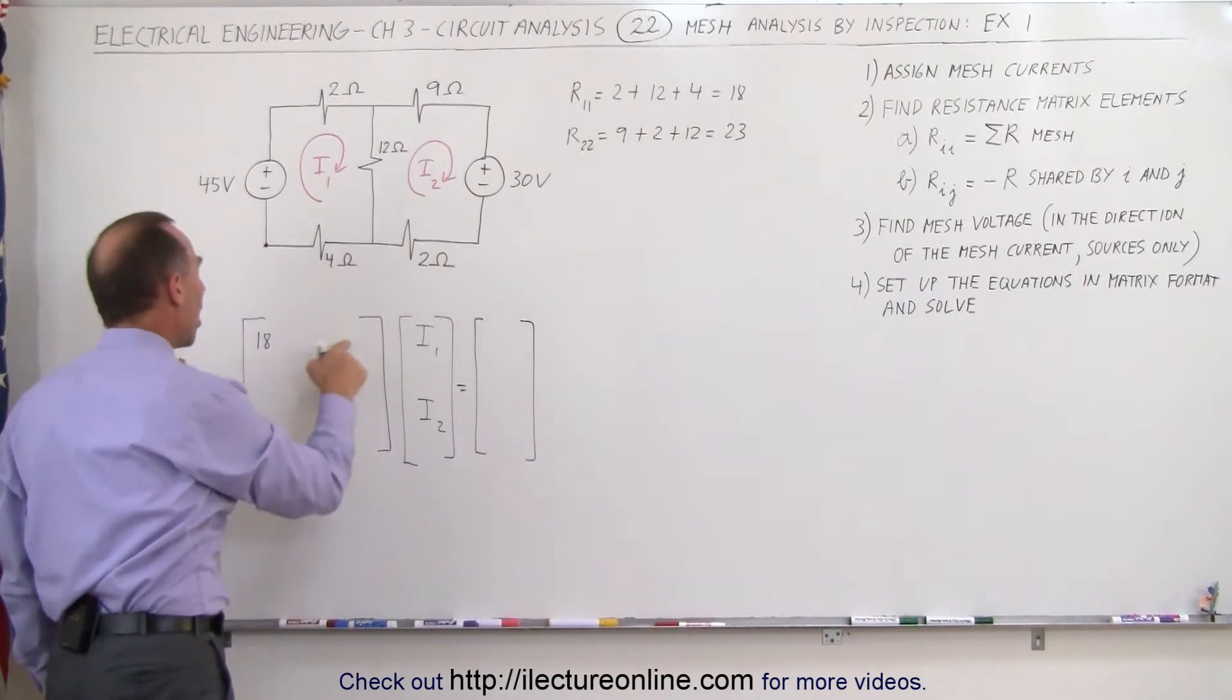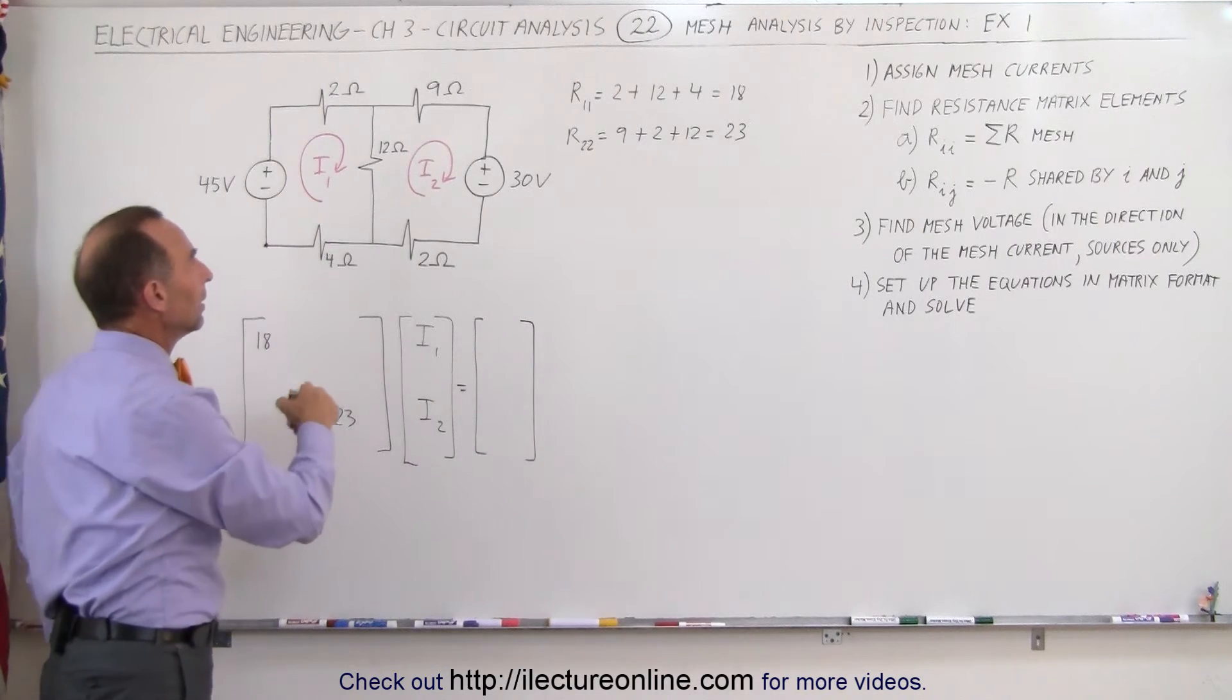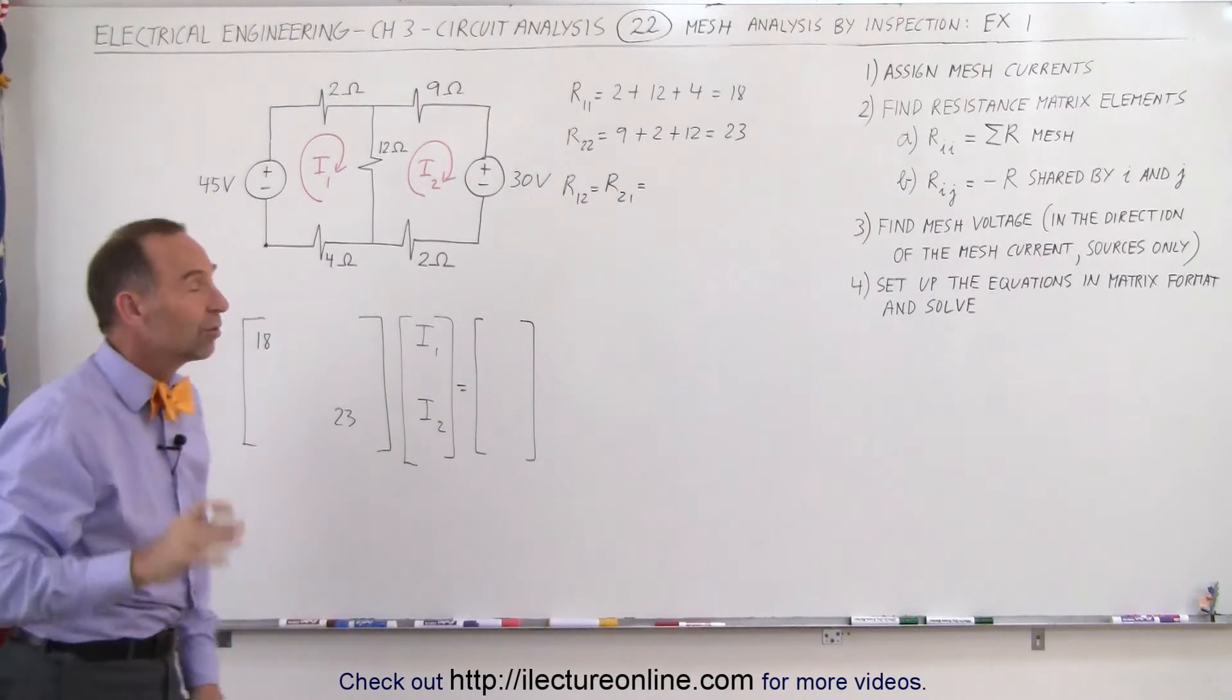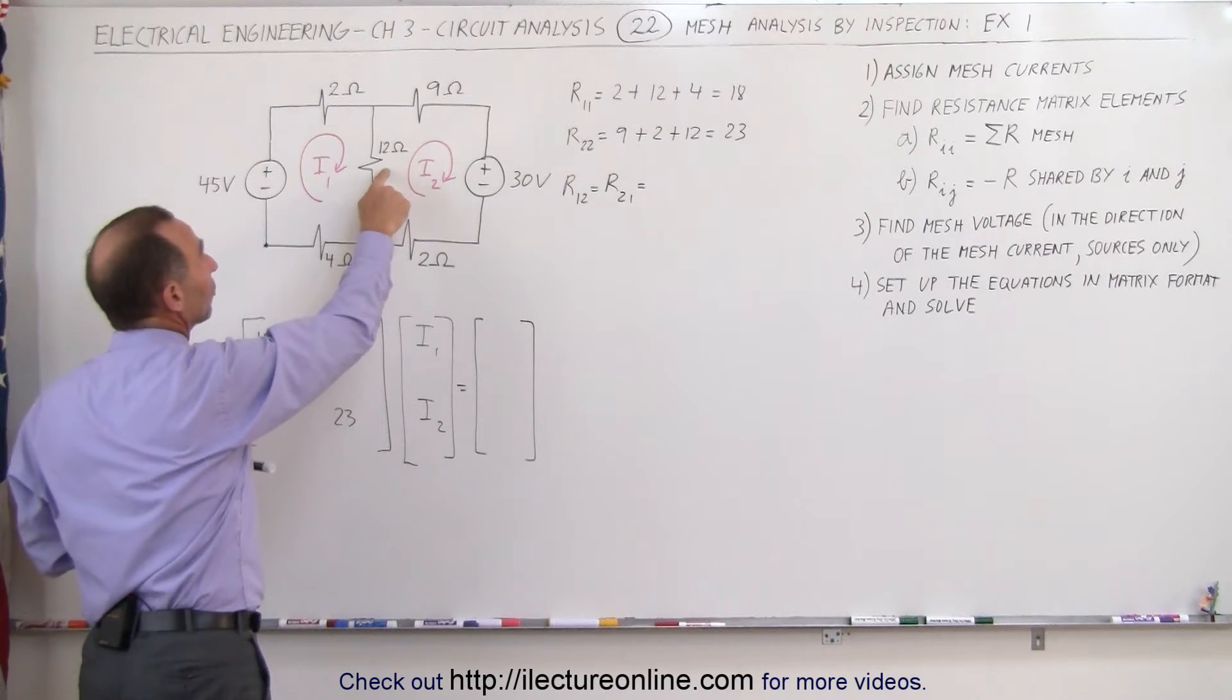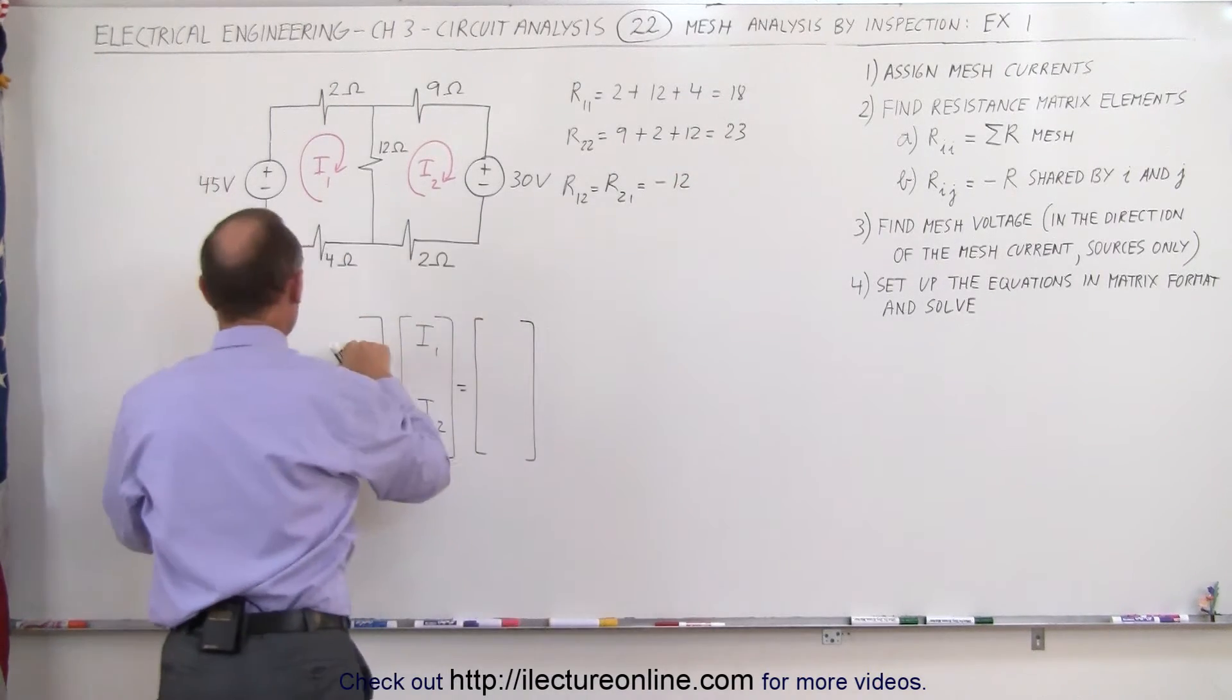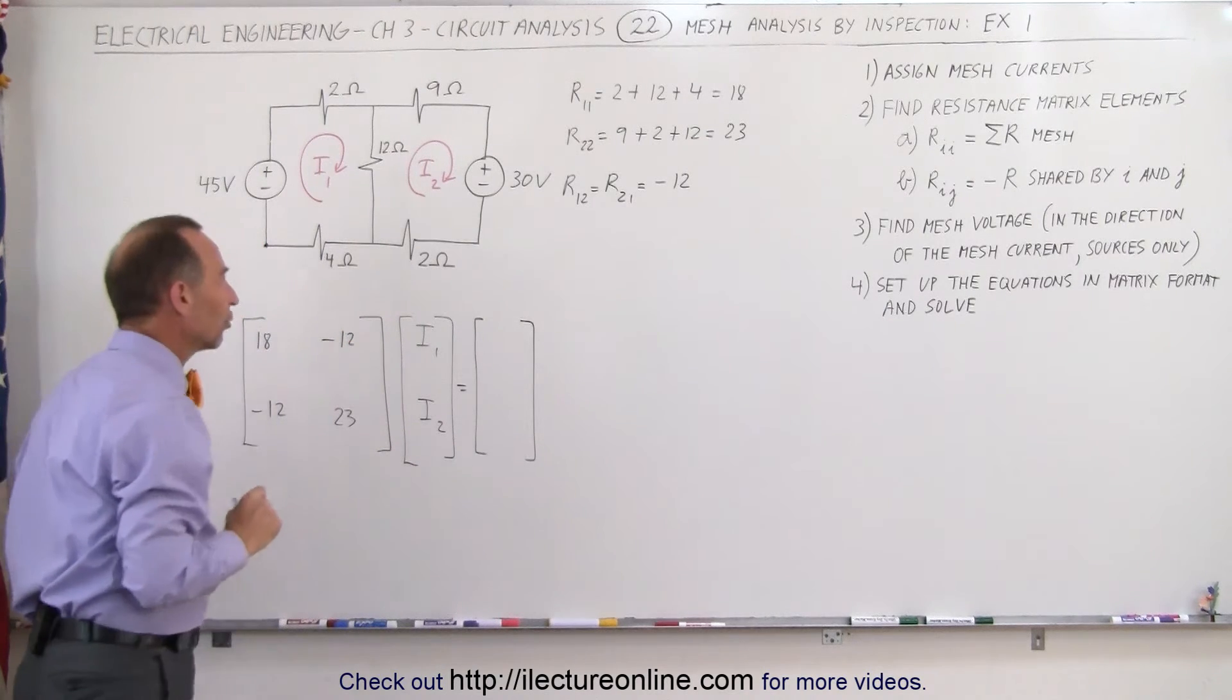Now we want to find the off-diagonal elements. That means in this case we're finding R12, which is equal to R21, which is equal to the sum of the resistance that they share. In this case they're only sharing one resistance, so that would be the number 12, but then we have to put a negative sign in front of that. So minus 12, and that goes in both these off-diagonal locations: minus 12 and minus 12.